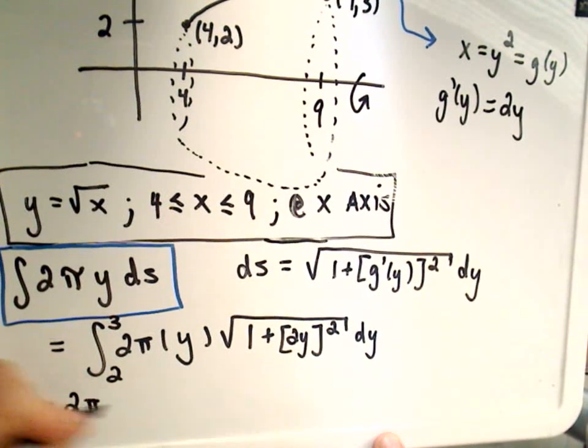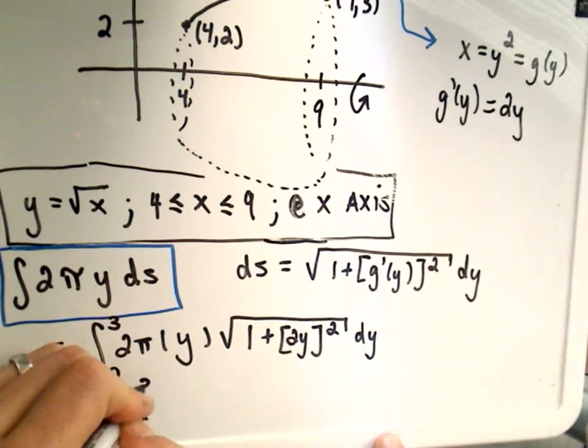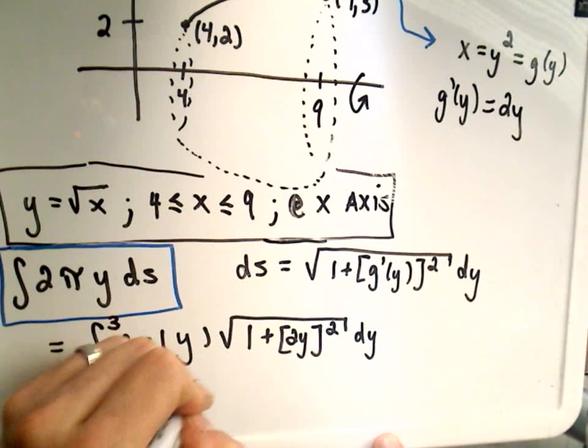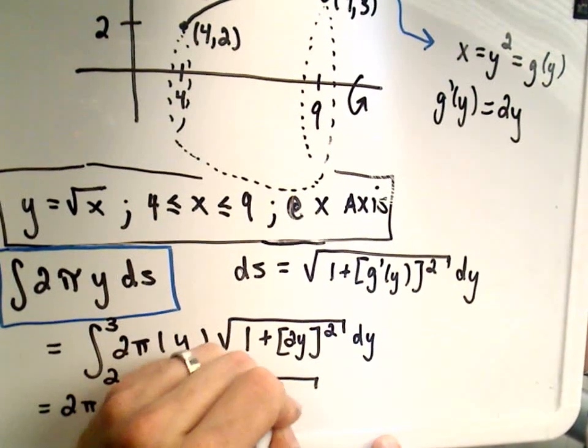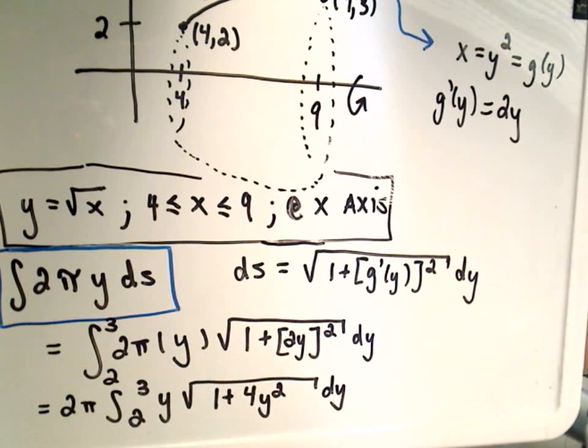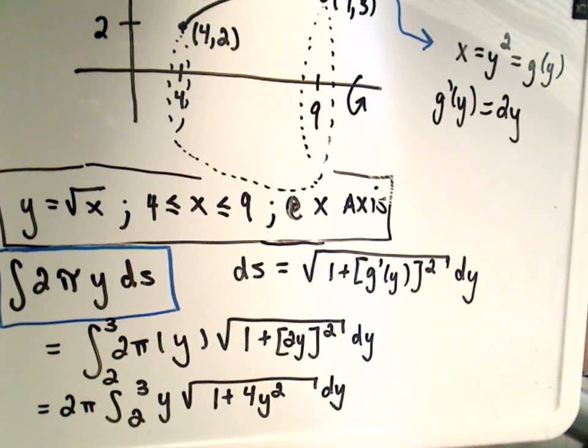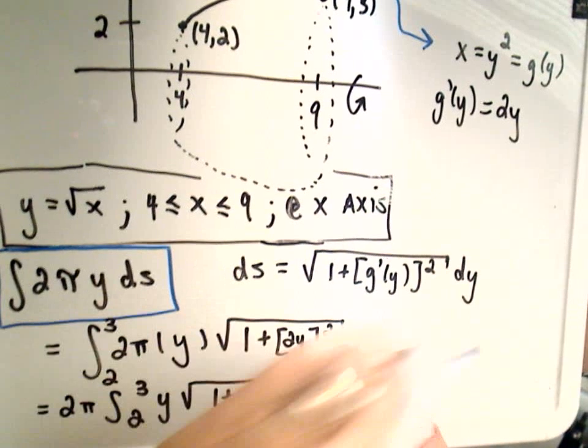So we can pull the 2 pi out front. We have 2 to 3 of the integral y square root 1 plus 4y squared, squaring the inside parts. And I think you'll probably agree that this integral, I think, is a little easier, actually, than the other one.